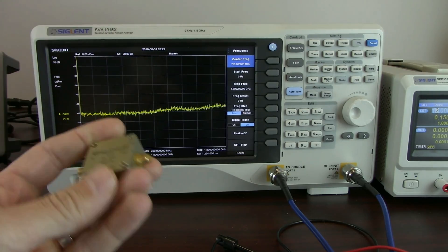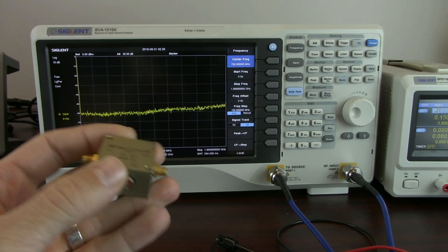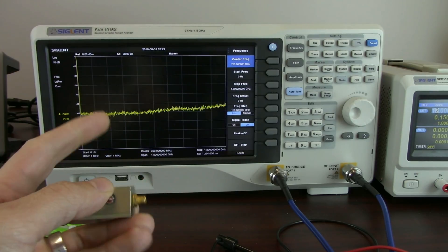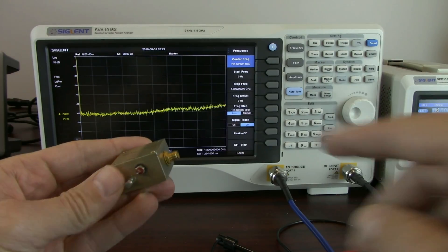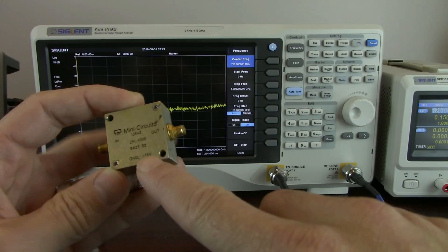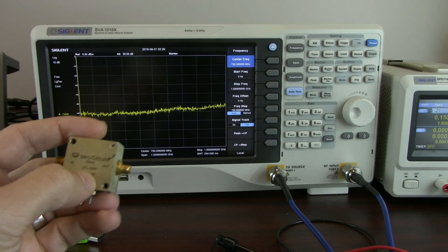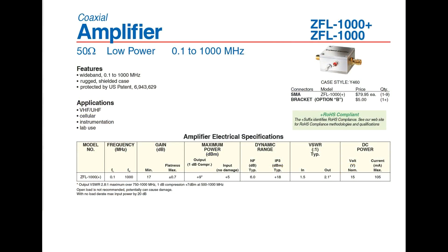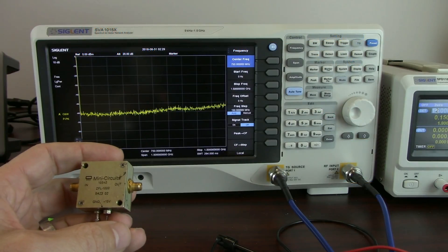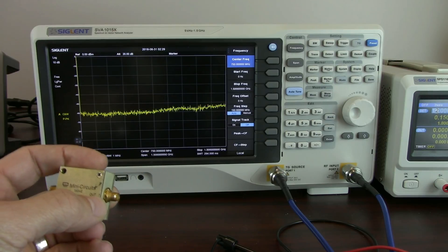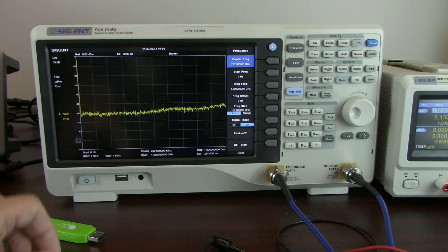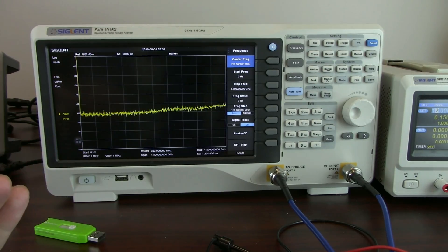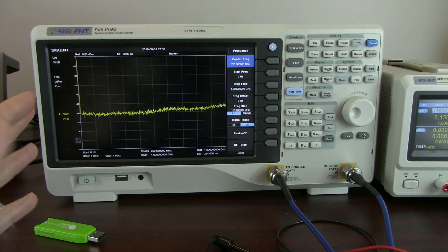For those of you that may be new to amplification or RF testing, an amplifier simply takes an input signal, increases the amplitude of that input signal, and then sends it on its way. There's a supply voltage here of 15 volts on this particular Mini-Circuits amplifier, that's a ZFL1000, and here is the subsequent datasheet. We've got the RF in and the RF out and we're just going to give it an RF input and then measure the RF output. The instrument we're going to use is a swept super heterodyne spectrum analyzer — in this case the Siglent SVA1015X.